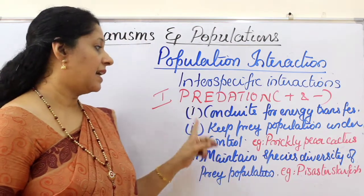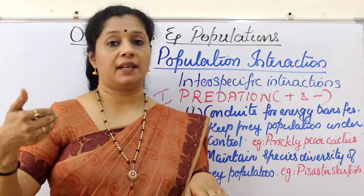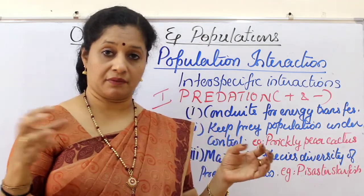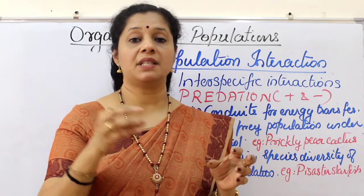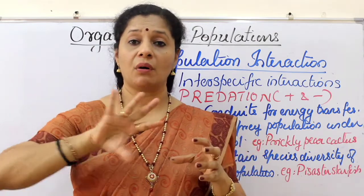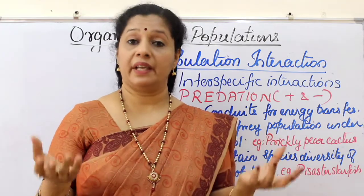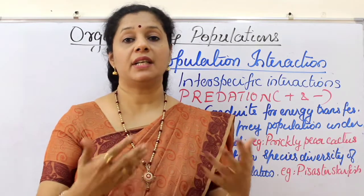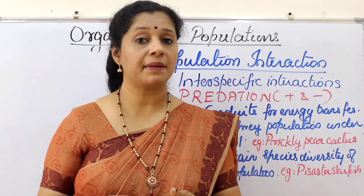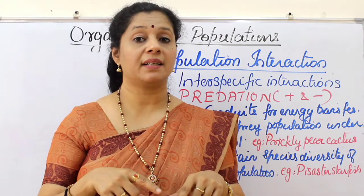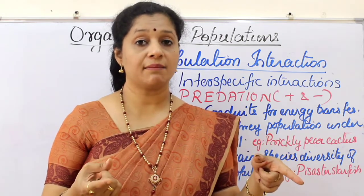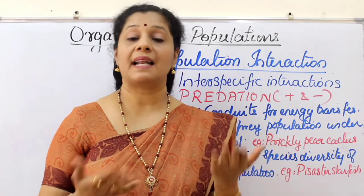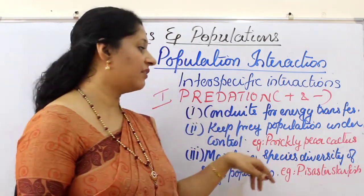Second, predators keep prey population under control. If there is no predator, the prey population will multiply to a larger extent. For example, in a simple food chain — grass, rabbit, and tiger — if we remove all tigers, the rabbit population increases. Initially it seems good, but over time the rabbit population will also decline because there will be competition for food, and producers will also suffer as they are fully eaten.